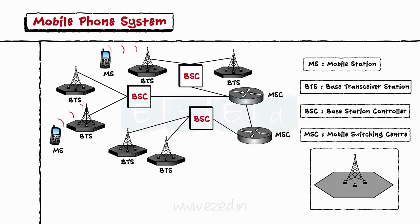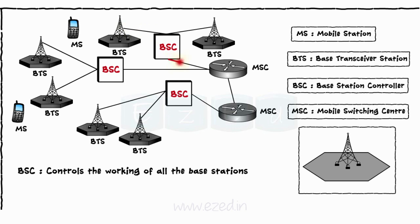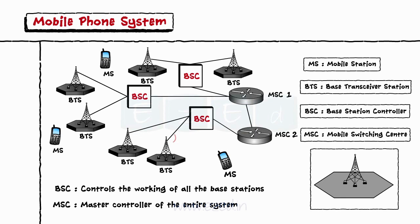Whenever a call is set up, the first signal is sent to the Base transceiver station of the cell. From this Base transceiver station, it goes to the central Base station controller, which controls the working of all the Base stations. From BSC, it then goes to MSC, or Mobile Switching Center, which is the master controller of the entire system. These MSCs are different for different areas. From MSC of area 1, the signal is transmitted to MSC of area 2, where it follows the reverse sequence: MSC to BSC, BSC to BTS, and from BTS to MS.